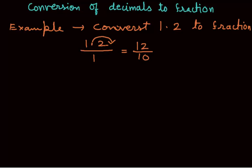So 1.2 is converted to the fraction 12 over 10. Now you can write this fraction in the lowest form. As both numbers are divisible by 2, it will be 6 over 5. So 1.2 is converted to the fraction 6 over 5.